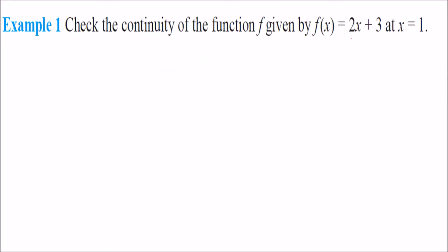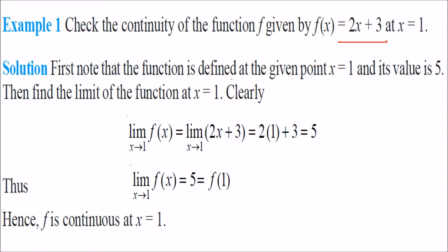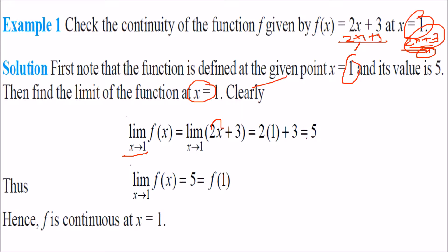Let us check the continuity of f(x) = 2x + 3 at x = 1. The function is defined at x = 1: the value is 2(1) + 3 = 5. The limit as x→1 is also 2(1) + 3 = 5. Since the value of the function at x = 1 and the limit at x = 1 are both 5, f is continuous at x = 1.